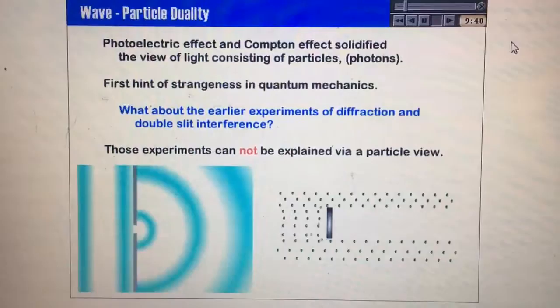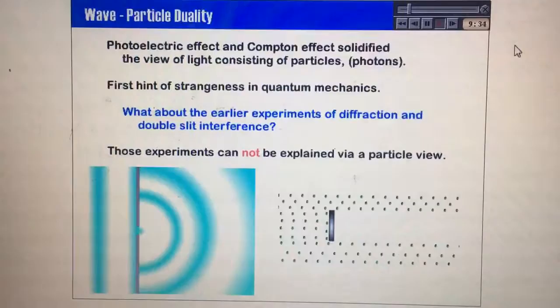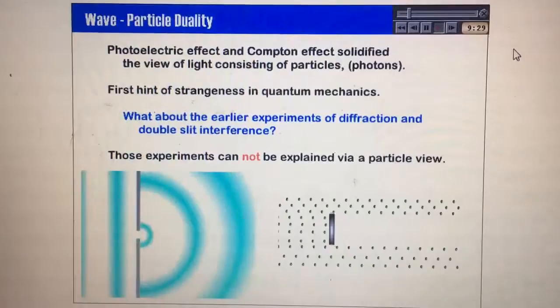If it was purely particles, the rest of the room would be dark. You'd just have the shaft of light coming straight in from the window. But you don't. It diffuses around. It diffracts as it comes through the window. So these experiments cannot be explained with a particle view.